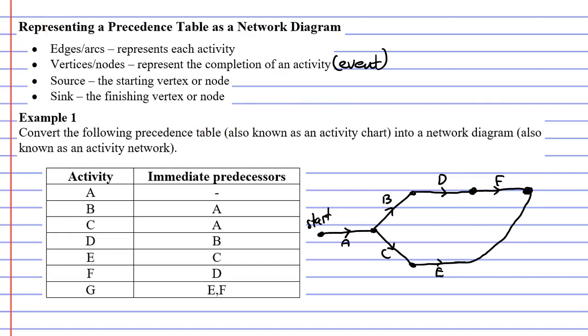And from there, I will put down an edge which represents activity G. You can see that this works quite well because when activities E and F finish together or are completed together, you then can have a single edge for activity G.